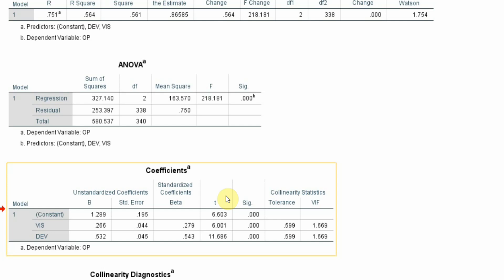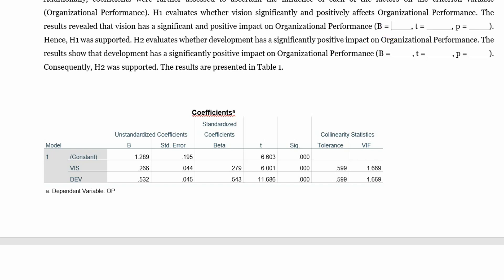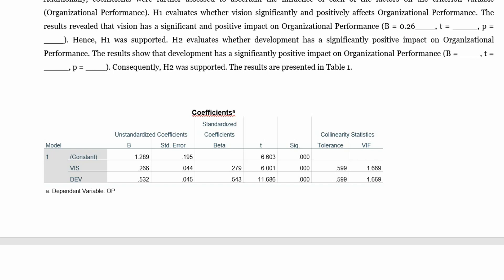Now 0.226. Let me copy this table. Paste it. So beta value 0.266.